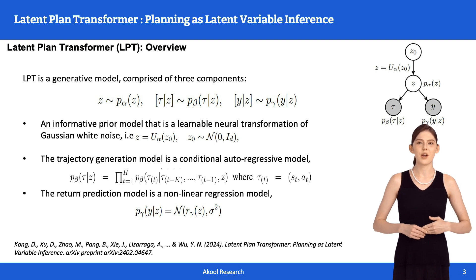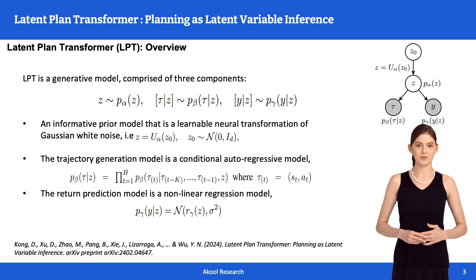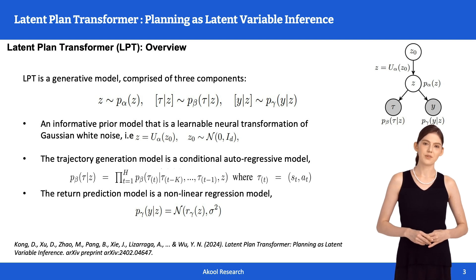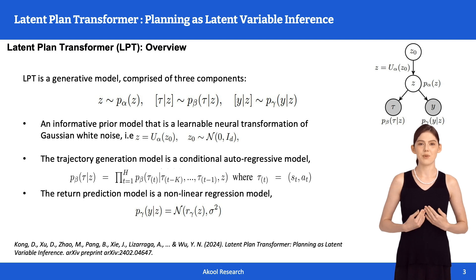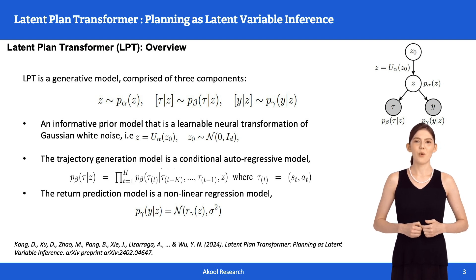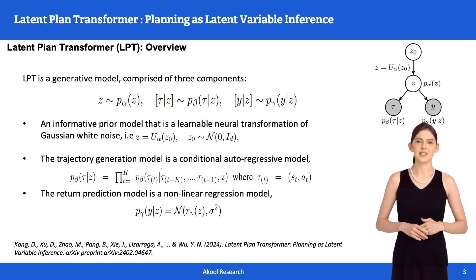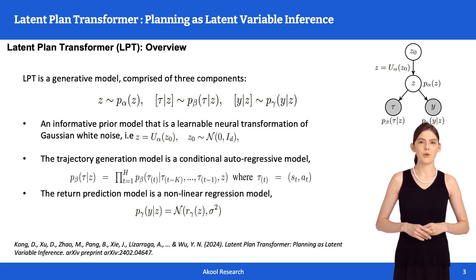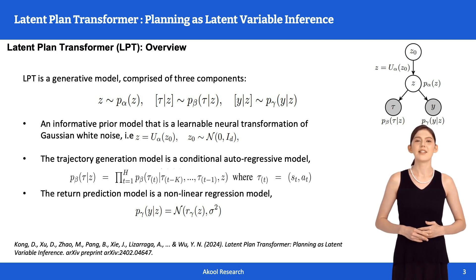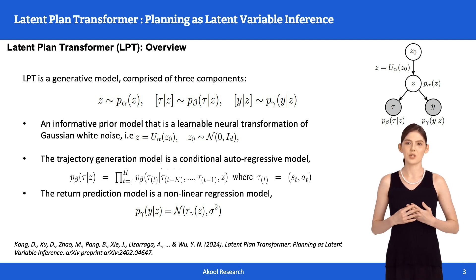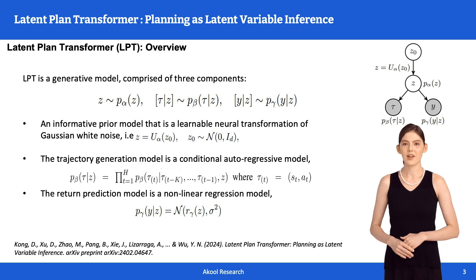Let's talk about our model, the Latent Plan Transformer. This model is designed specifically for planning tasks and has three main components. First, an informative prior model — a learnable, more informative prior distribution as a transformation from Gaussian white noise. Think of it as starting with random noise and transforming it into something meaningful in the latent space. In the figure, we represent this transformation as Z = U_α(Z₀), where Z₀ is Gaussian white noise and U_α is a learnable neural transformation.